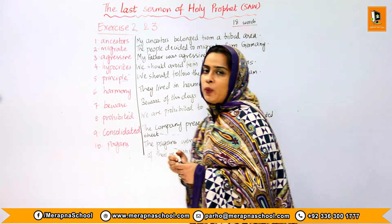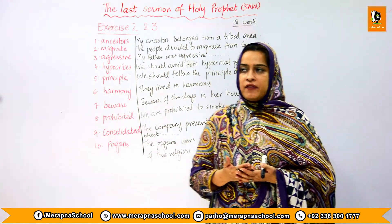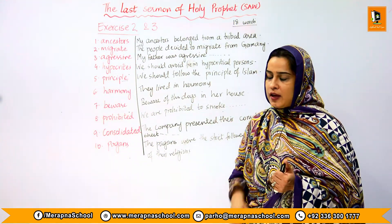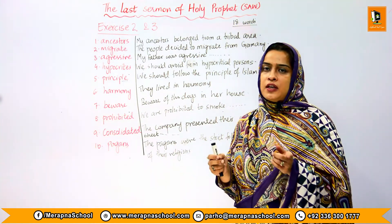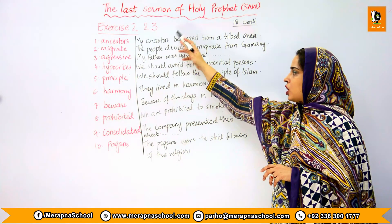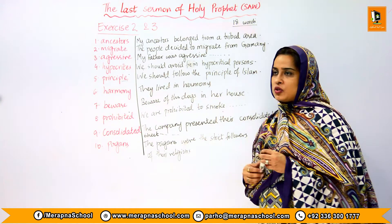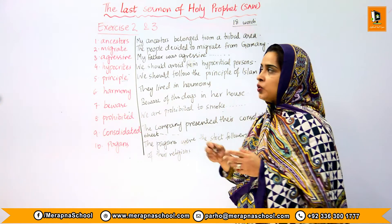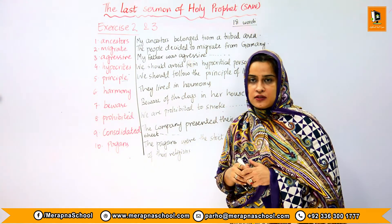In this video we have covered exercise number two and three. Exercise two is about the meanings of the words — they are already given, and if you have any issues, the glossary at the end of the book is always there. Exercise three is about constructing sentences for 10 words chosen from the 18 words in exercise two. You can choose any 10 words for the construction of these sentences.